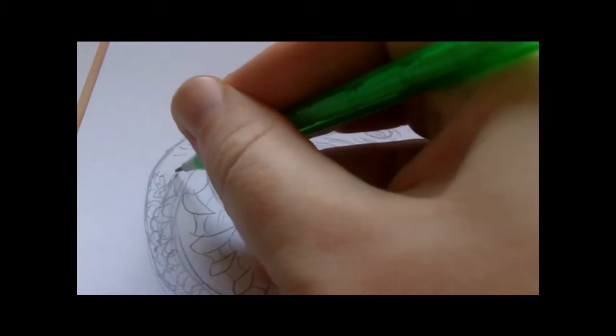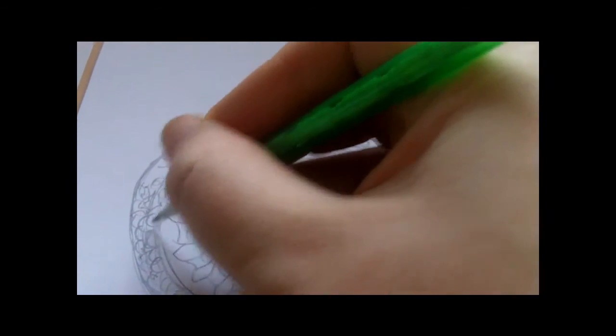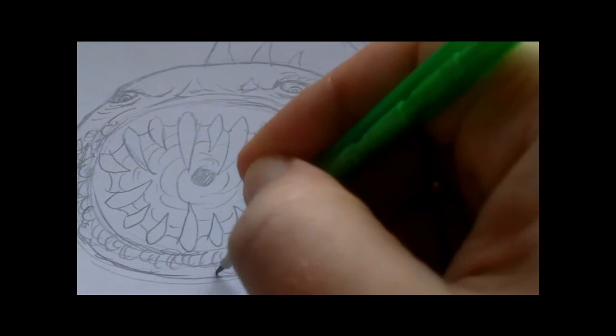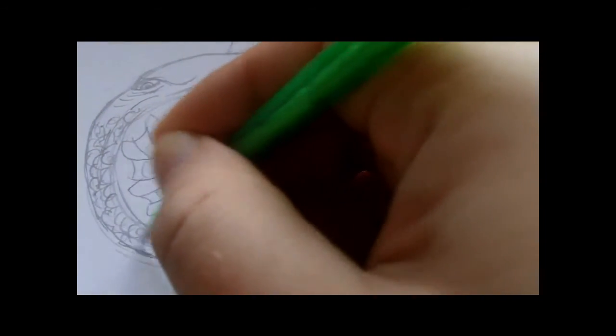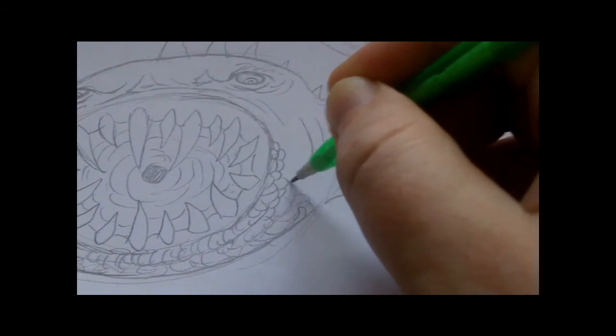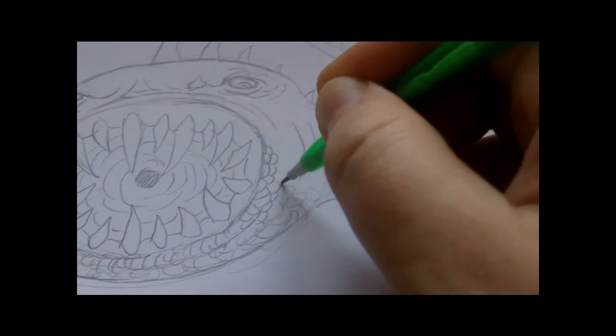Just about planning roughly where the fish scales go. It's just like a random placement of that anyway. If you was going to ink this then you'd just go over them and make them more neater.